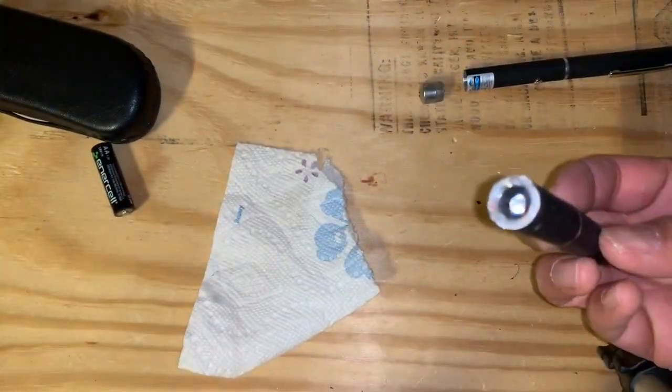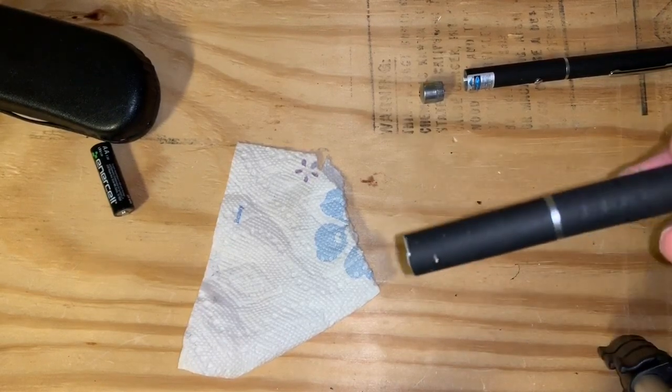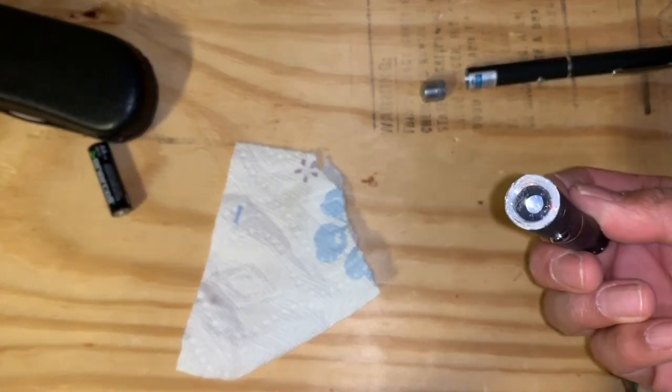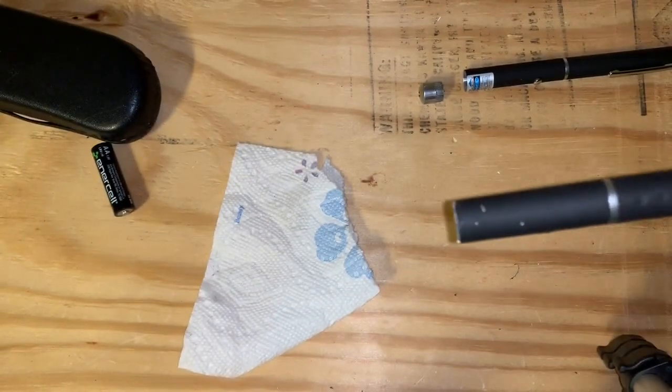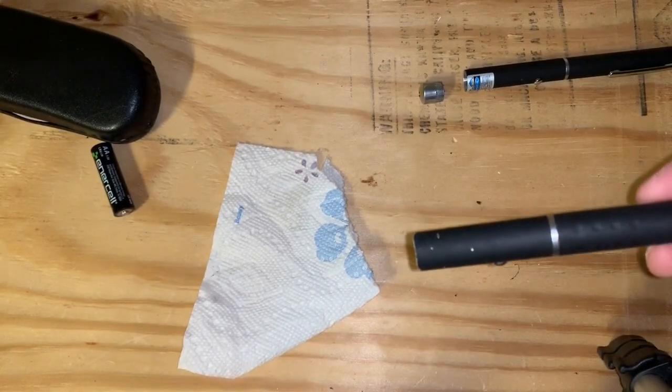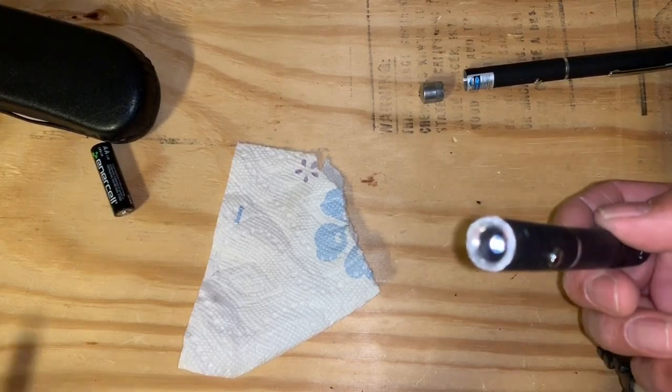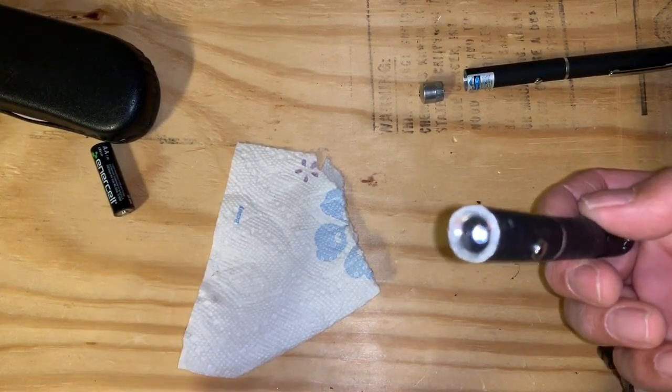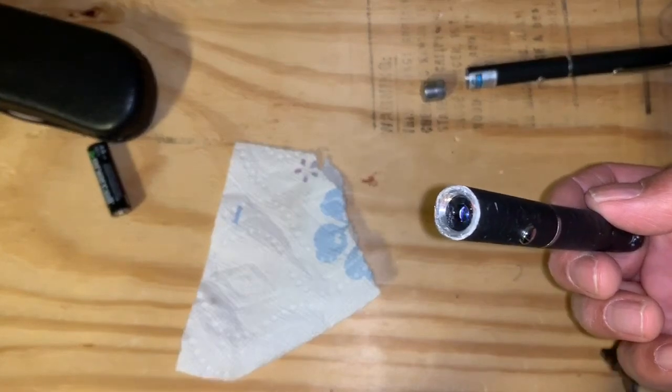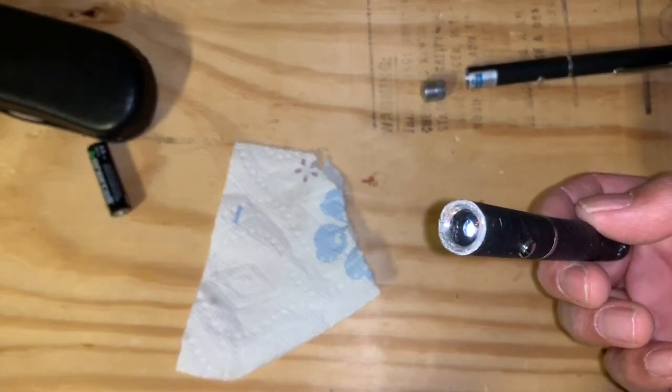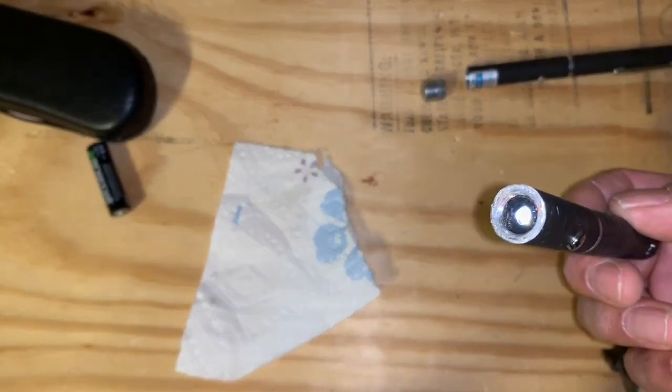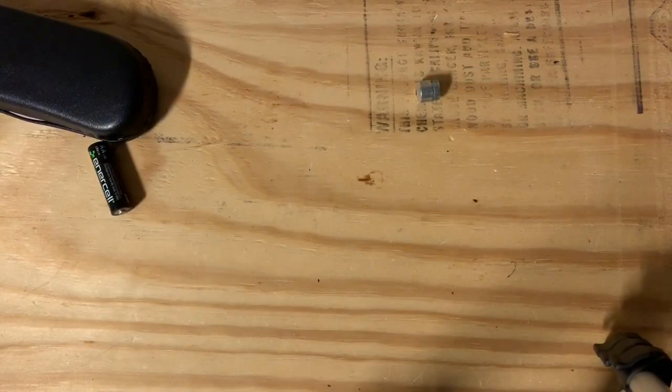So there you have it - simply by refocusing this blue laser by screwing in the lens, it can burn. Now the opposite is also true. If you turn the lens out all the way so that it goes out of focus in the opposite direction, it'll make a divergent beam. Let's see what that looks like. This is what a divergent beam looks like.